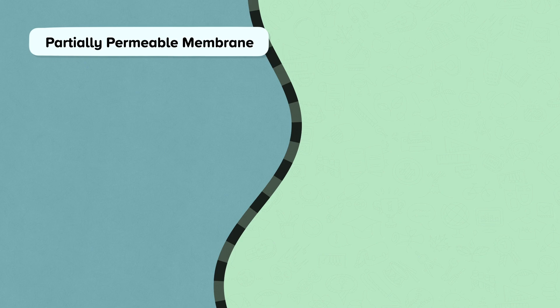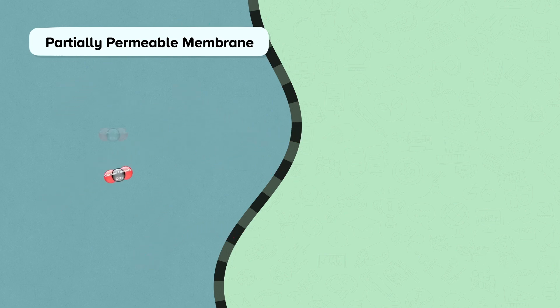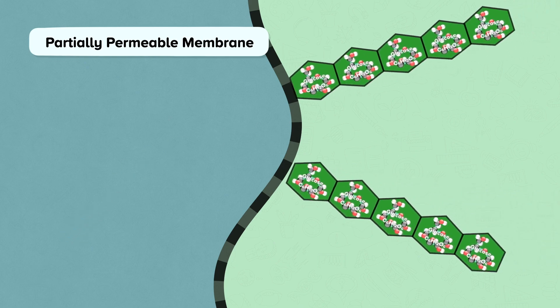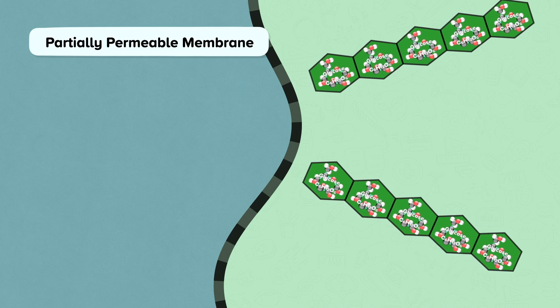For example, small molecules like oxygen and carbon dioxide can diffuse through a cell membrane. However, larger molecules like starch are too large to diffuse through the membrane.